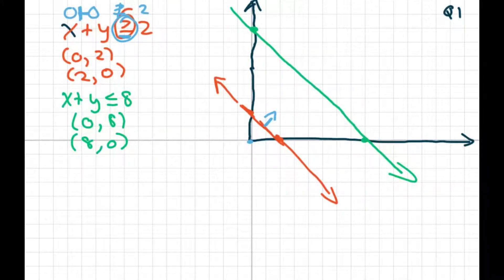Now this one says less than, so if I put 0, 0 in here, I have 0 plus 0 is less than or equal to 8. And that's true, so that means you're shading towards this direction. So we're going to be shading down.